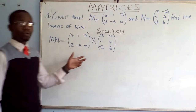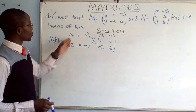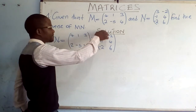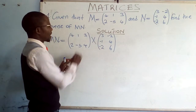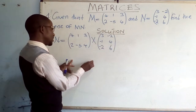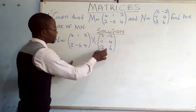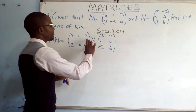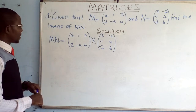Multiplication of matrices requires using the row-by-column method. This row must multiply this column to get the first term in the answer matrix. This same row must multiply the last column to get the second term in the answer matrix. This will multiply this to get the term in that position, and this same row will multiply that to get the last number in the answer matrix.